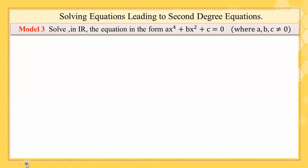Now let us go to Model 3: solving the equation of the form ax^4 + bx^2 + c = 0, where a, b, and c are non-zero. Try to think before we start. It seems that this equation is not similar to the second degree equation because we have x^4, but how to deal with that? Let us see.